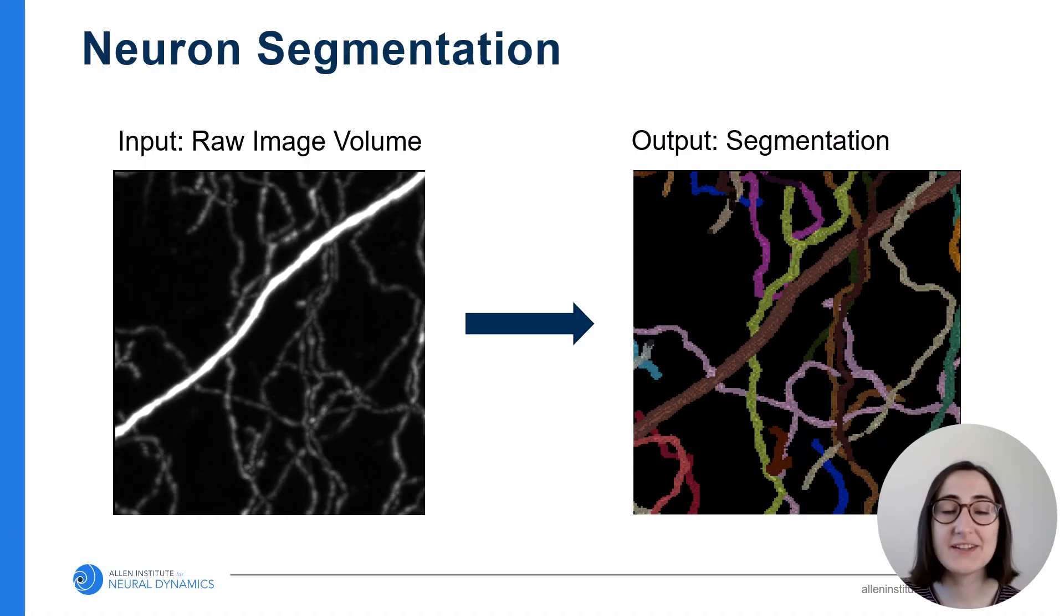Segmentation is a classical problem in computer vision that refers to detecting objects in an image. In this case, our image contains neurons, and our objective is to identify and trace each individual neuron.